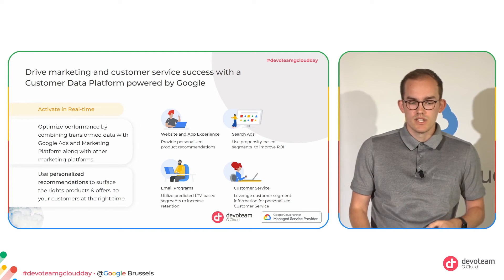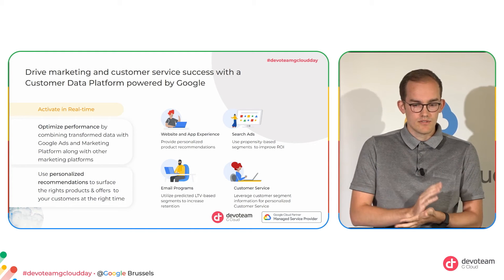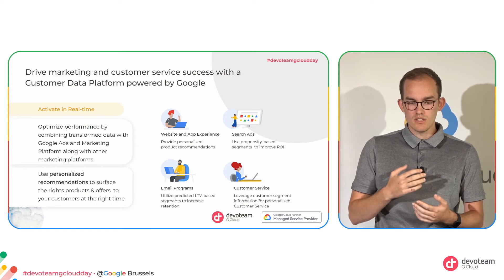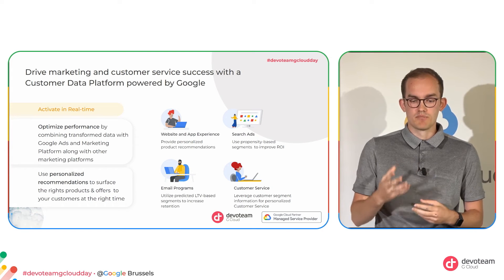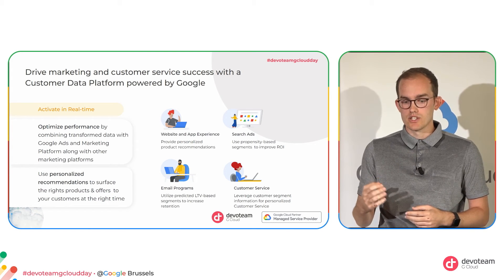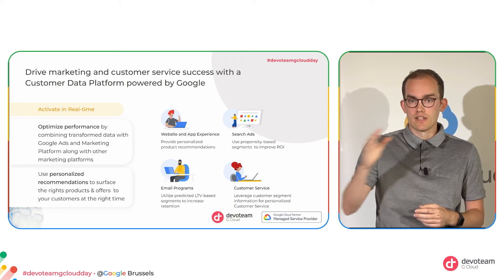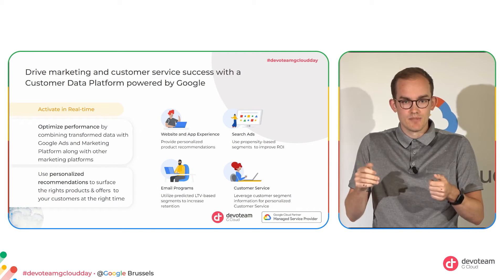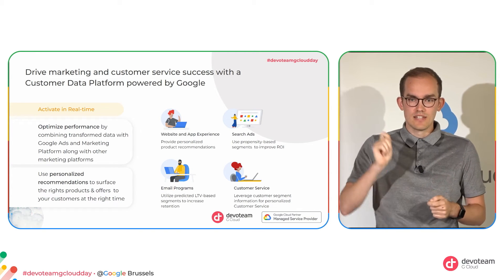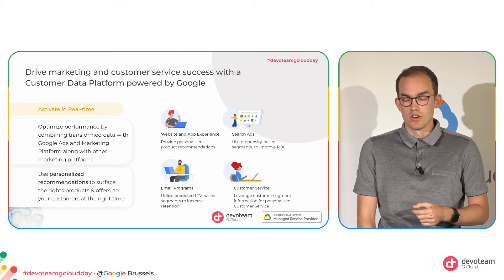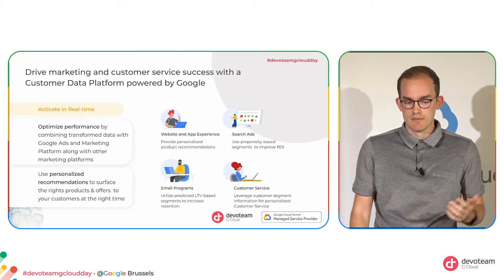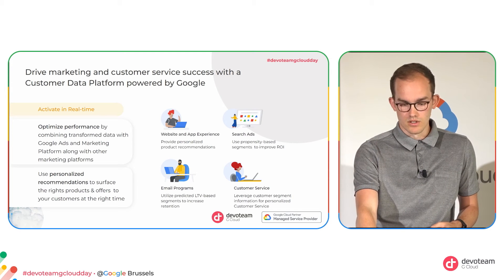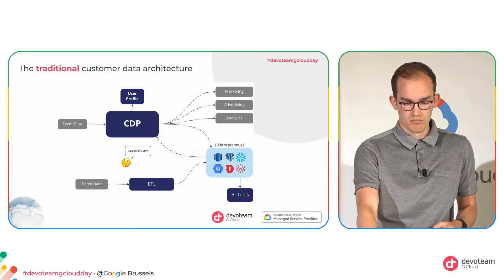Activating data means, for example, delivering customized personalized content on your application, targeting ads to specific users who are on the verge of buying something and just need that extra push, or running email programs. This can all be set up automatically with Google products.